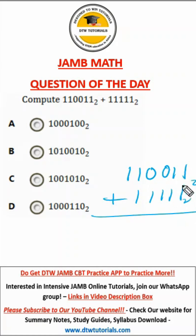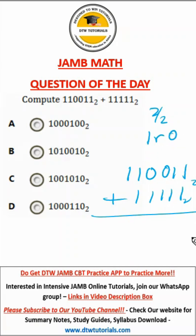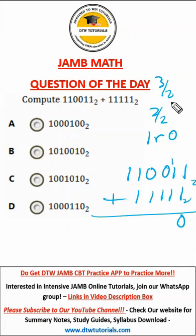So how do we add in base 2? 1 plus 1 is 2. So we do 2 divided by 2. What is 2 divided by 2? It's a 1 and a remainder 0. So we drop the remainder and carry the 1.